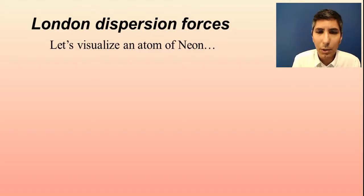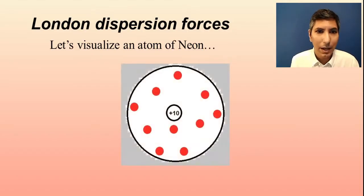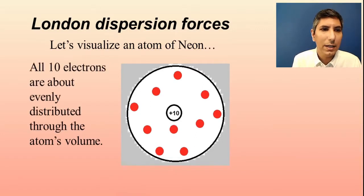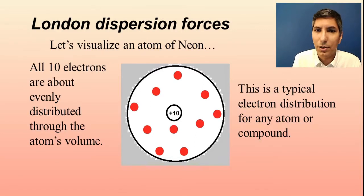Let's imagine that we have an atom of neon and in that atom we're of course going to have 10 protons in the middle. I'm not going to worry about the neutrons because those don't have a charge but we have these 10 electrons that are for all practical purposes buzzing around in the electron cloud in their energy levels, in their sub-levels and orbitals. And this is a fairly typical distribution for the electrons of any atom or to be honest any compound as well. These electrons are distributed fairly evenly throughout the volume of the atom.